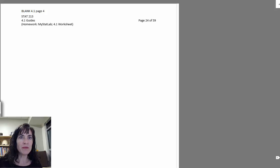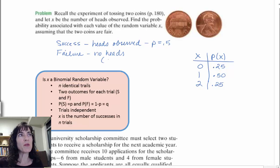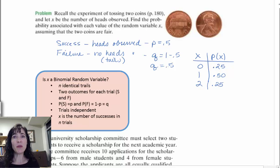And the probability of that, our P, is going to be 0.5 for a single trial. And then we also can say that failure is going to be no heads, which is, of course, tails is observed. And that's going to be q, which is 1 minus 0.5, and that would be q equals 0.5. So it's 50-50 on whether you see heads or tails, and we know that.